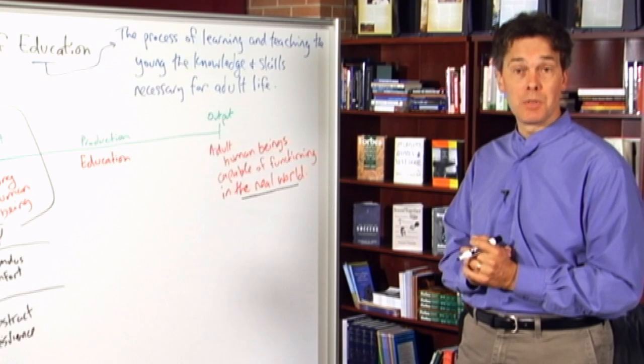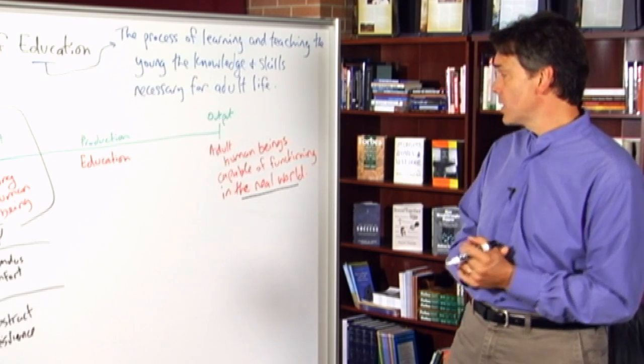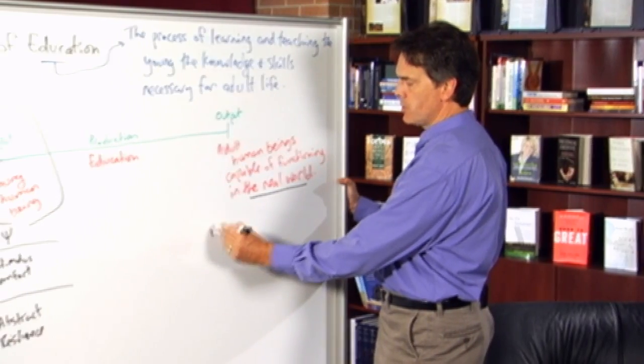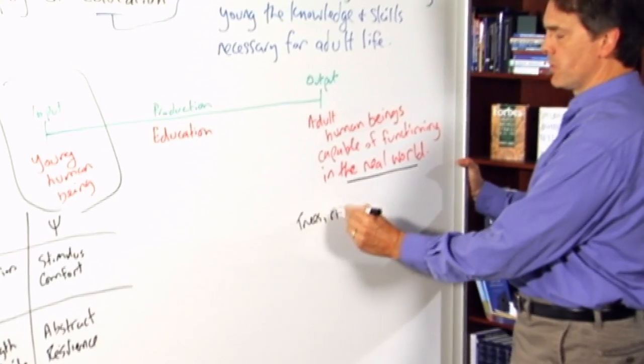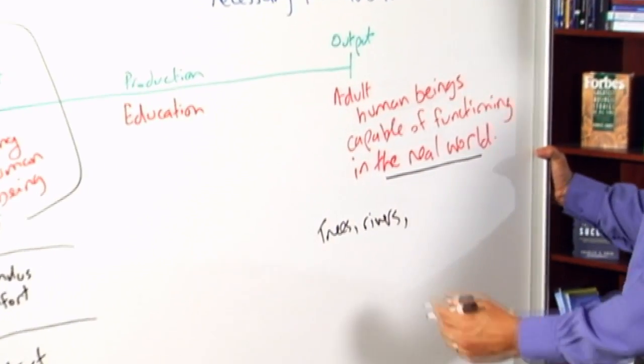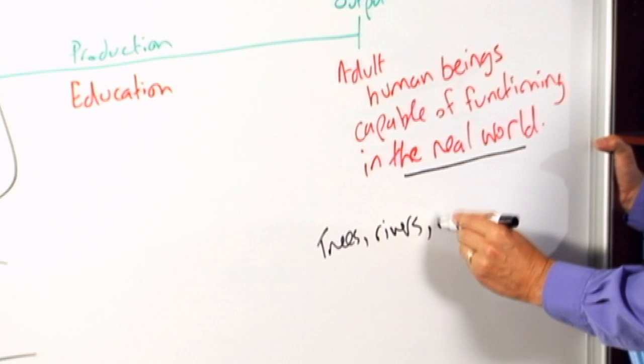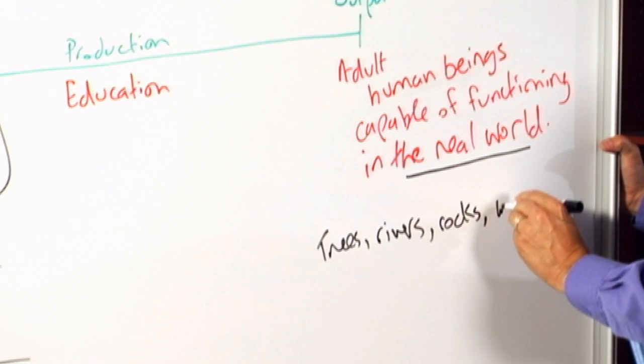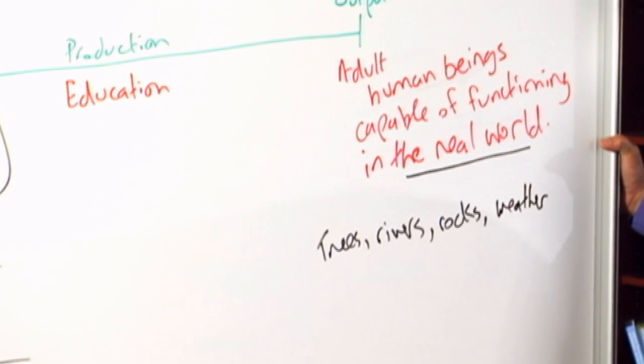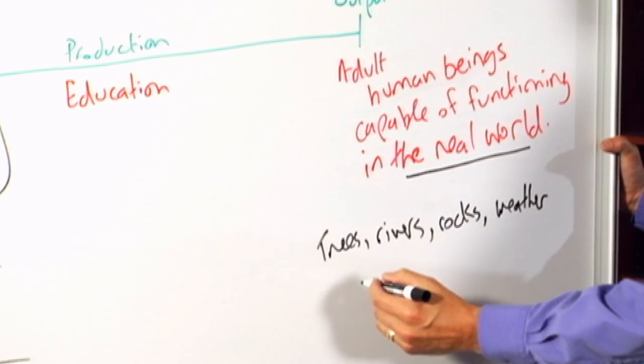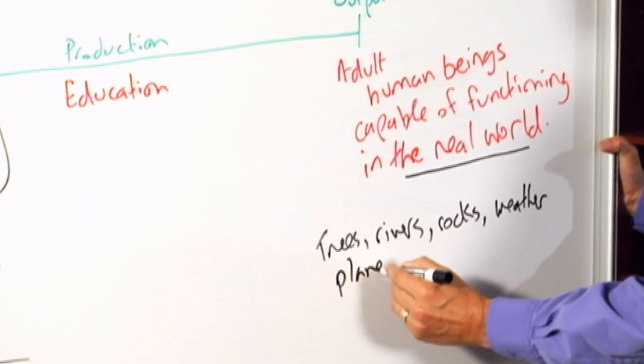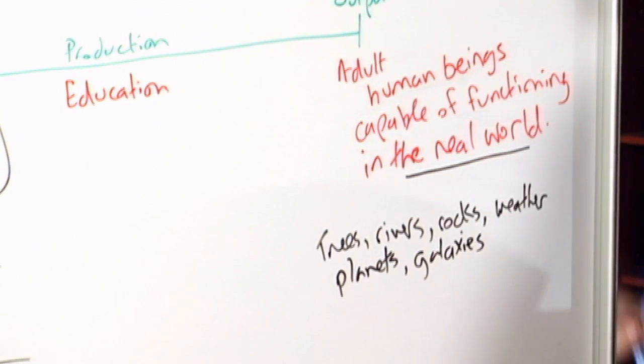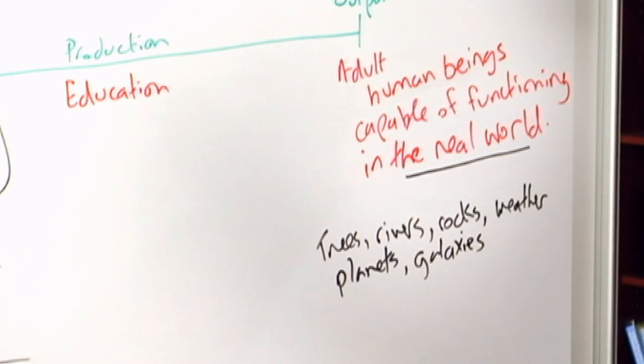Okay, lots of answers again possible here, but suppose we said the following. Well, in the real world we know that there are things like trees, and there are rivers, and there are rocks, which can hurt you if you bang your toe on them. There are things like the weather. There is, looking more broadly afield, there are various planets, and beyond that there are galaxies. So we start from our immediate environment here and scale out.